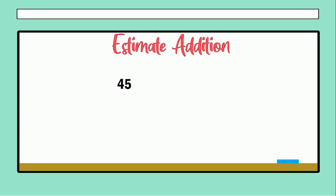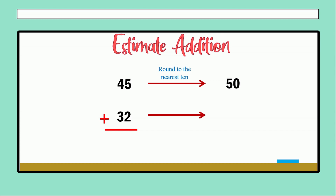In the first example we have estimate addition. We have the first numbers: 45 plus 32. In addition, we have to round to the nearest ten. 45 is between 40 and 50, but the idea is that we choose the greater — in this case, 50. The ten that is greater between 40 and 50 is 50, so for that reason we choose 50.